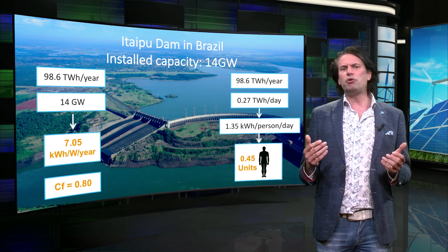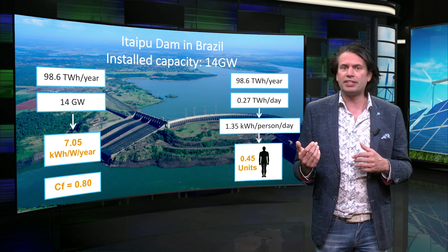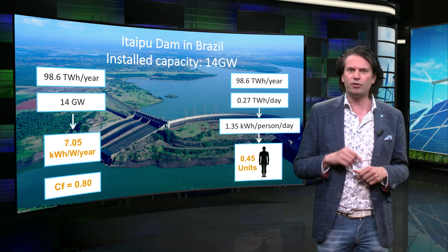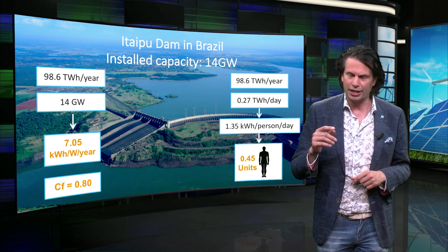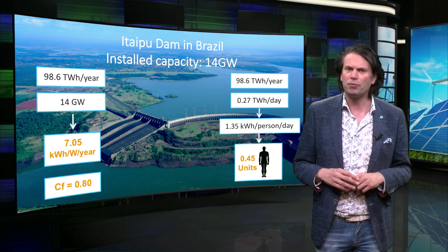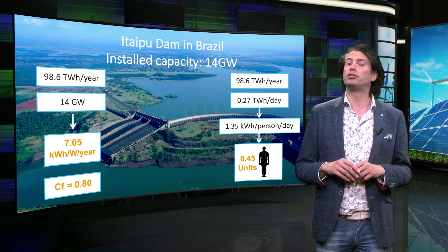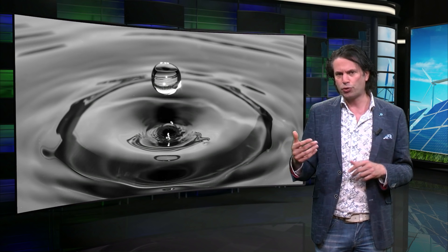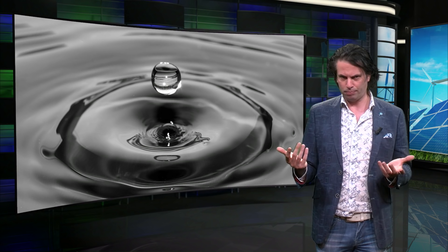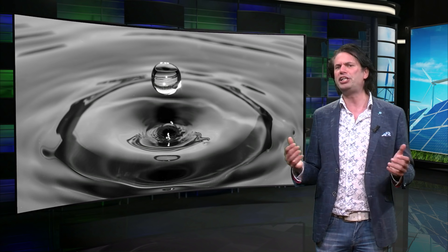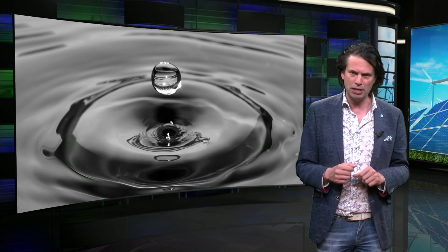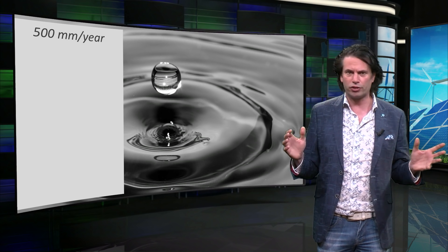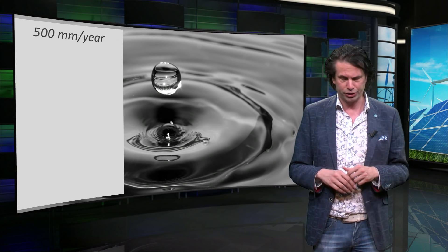Other renewable energy sources like solar and wind can have much lower capacity factors — we will look at those factors later this week. For now, we will make an estimate of the potential of hydroelectricity. Let's work through an example. Let's say a certain region has about 500 mm of rain per year and there is no meltwater from mountain snow or glaciers.